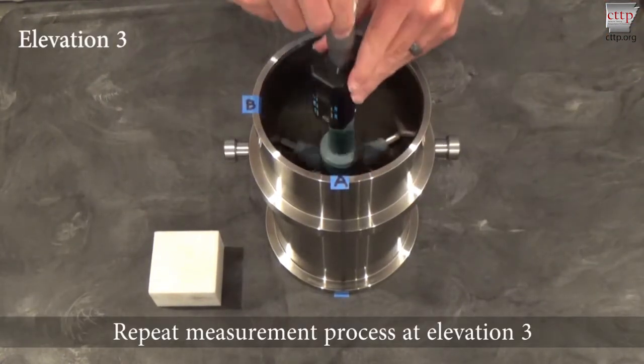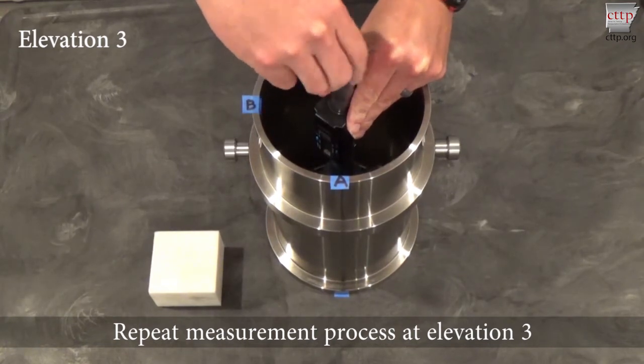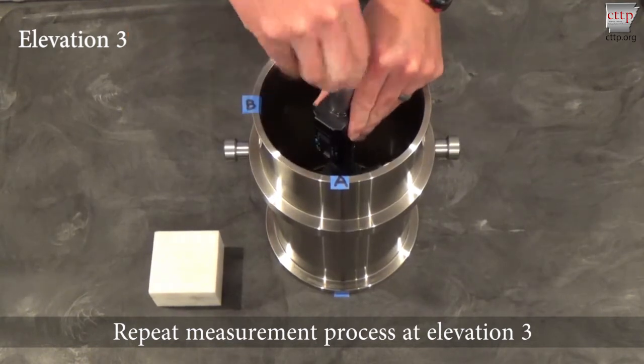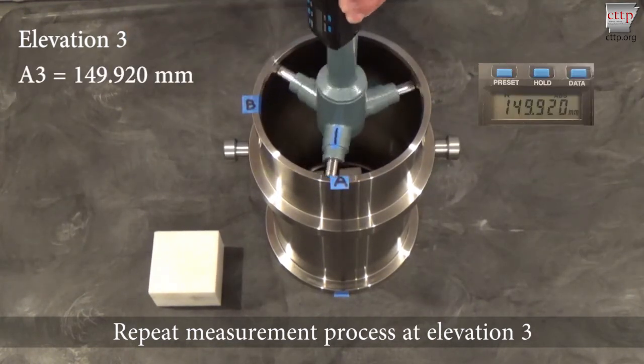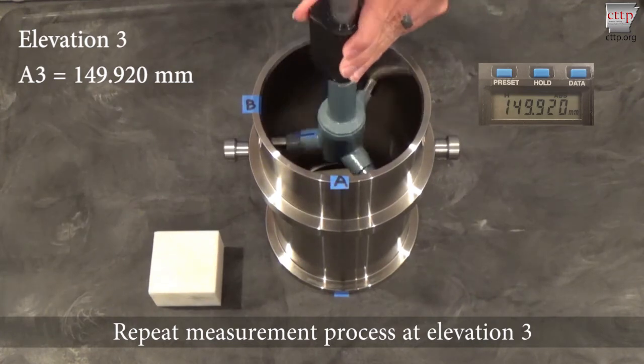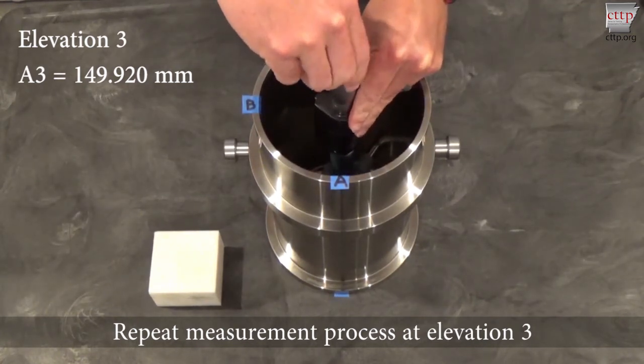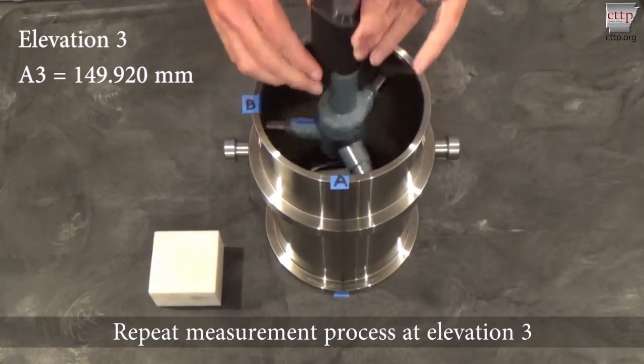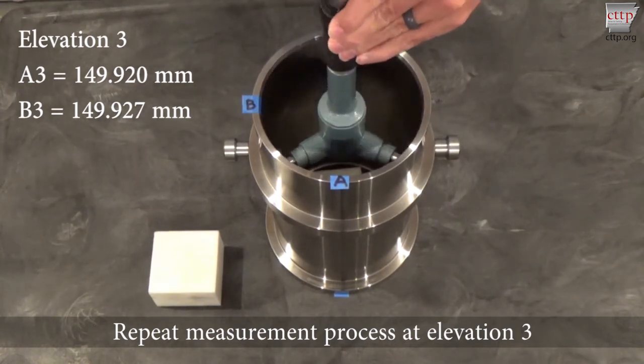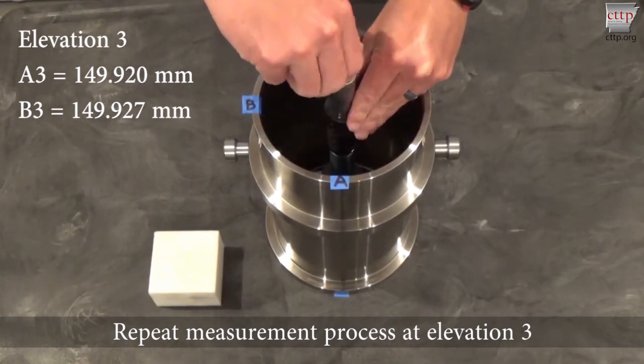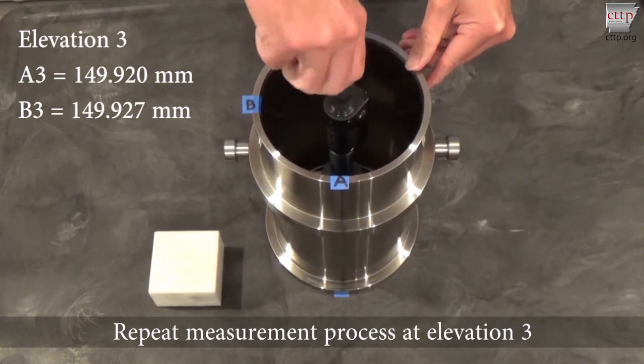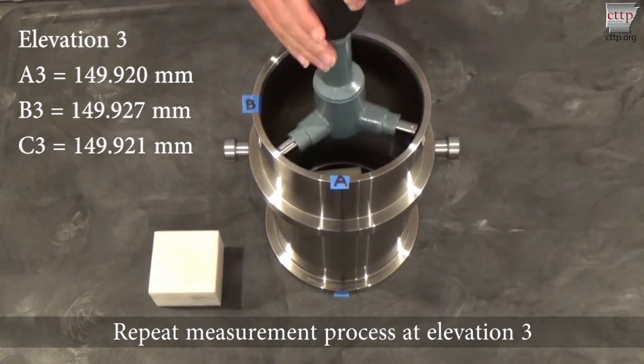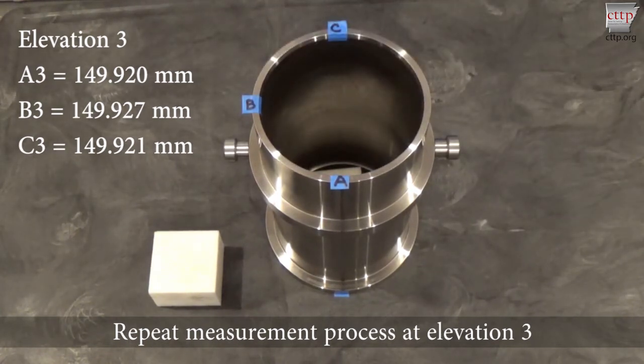Insert the bore gauge and repeat the measurement process at positions A, B, and C. Loosen and remove the bore gauge from the mold.